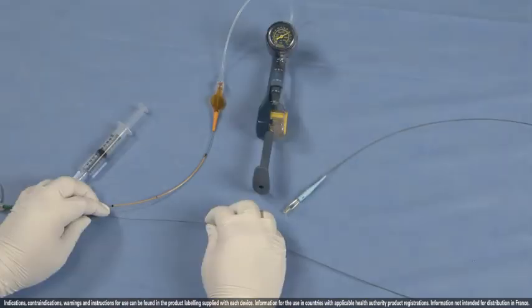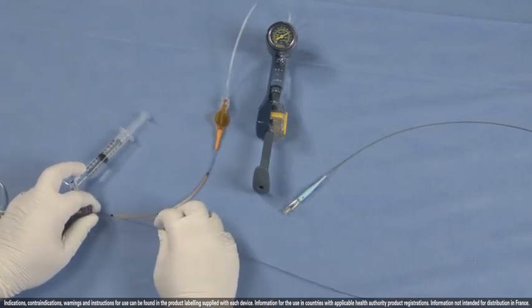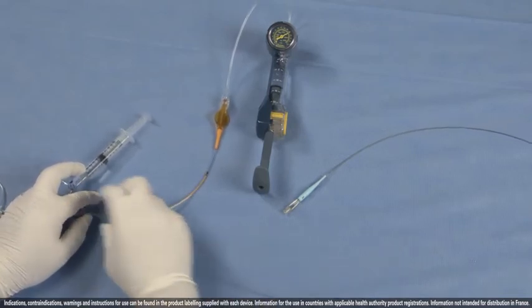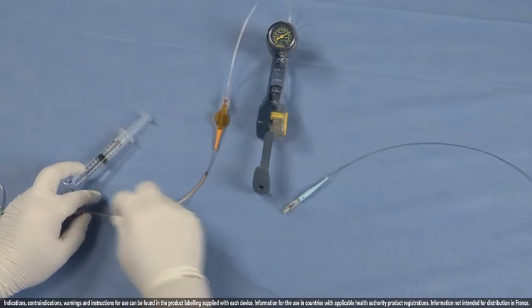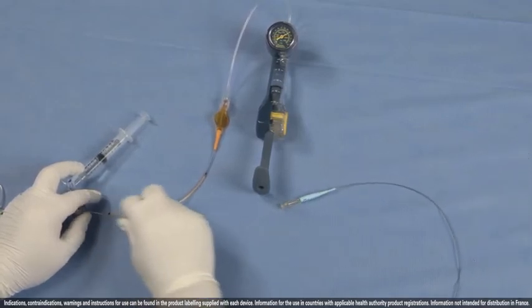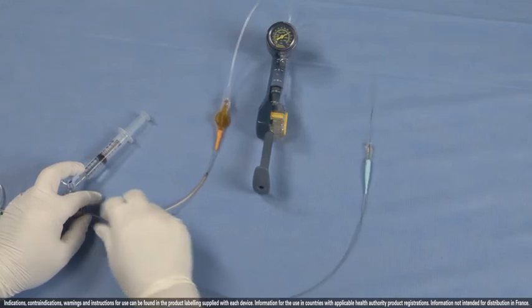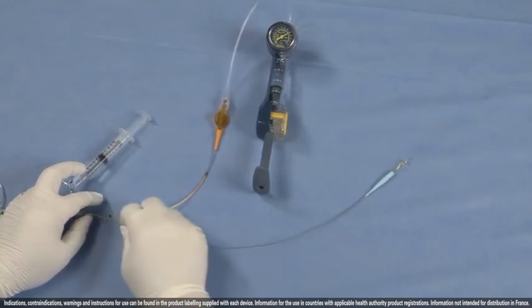Now that Stingray LP has been removed, if you want to use a second interventional device while Trapper is still inflated, load it on the wire and advance it. Here we have a Corsair micro catheter. We're going to advance it until we are just proximal to the Trapper balloon, and we have access to the wire. You can see the wire is coming out now, and we're just proximal to the Trapper balloon.